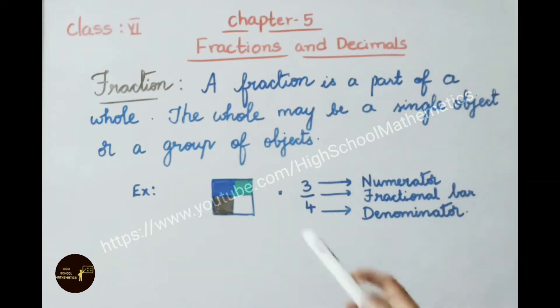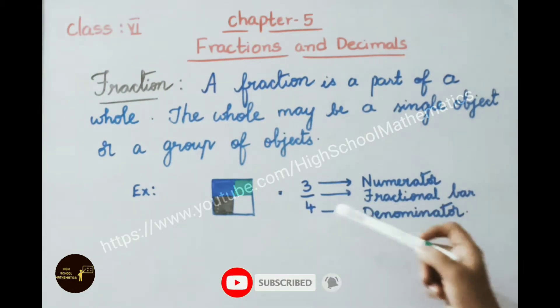Let us see an example. Here this picture is divided into four equal halves and each part is colored, that is shaded. So it can be represented in the form of fraction, that is out of four only three were shaded. So it is represented as 3 by 4.